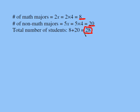Now, let's remember that we have 8 math majors and 20 non-math majors. We're going to go back and check our answers. We'll have to remember these two numbers. 8 math majors and 20 non-math majors.